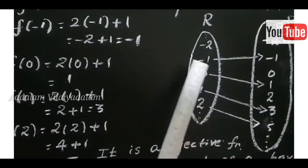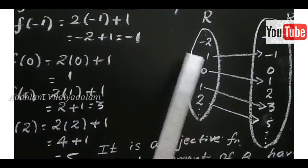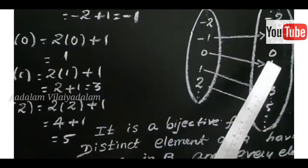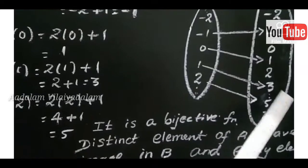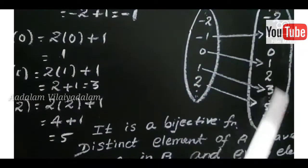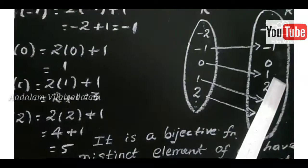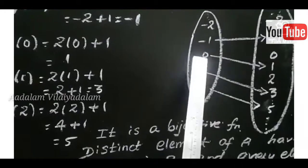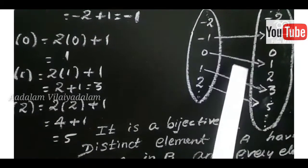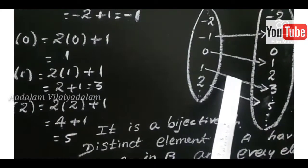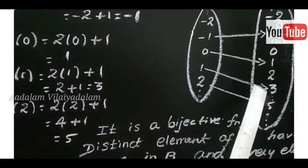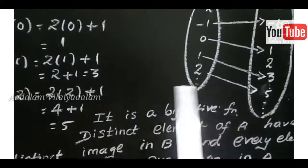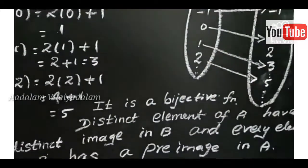Every element in the domain has a different image in the codomain, therefore it is a one-to-one function. Every element in the codomain has a pre-image in the domain, therefore it is an onto function. Since it satisfies both one-to-one and onto, therefore it is a bijective function.